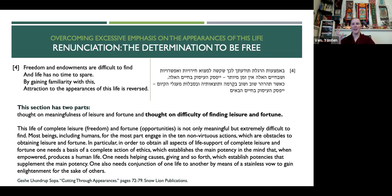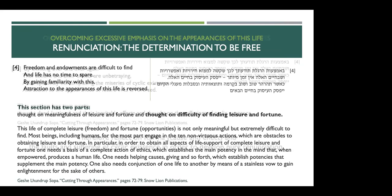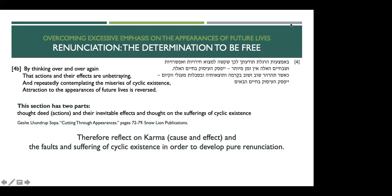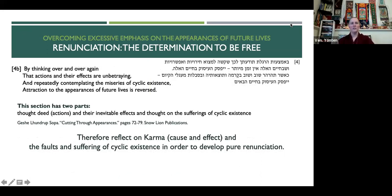Without renunciation, you'll have no willpower to get out of your negative patterns. If we don't see how the appearances of this life are all ego-obsessed and temporary and not useful, we're never going to break the spell. Freedom and endowments are difficult to find, and life has no time to spare. By gaining familiarity with karma and the miseries of cyclic existence, attraction to the appearances of this life and future lives is reversed. If we generate renunciation, the way to do that is to think about karma and to think about the suffering of cyclic existence — those two things.